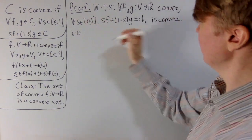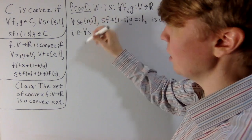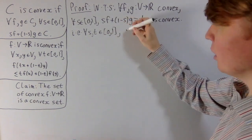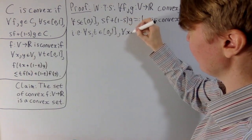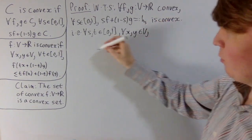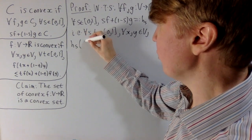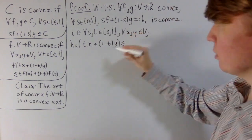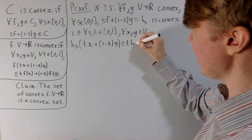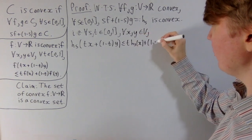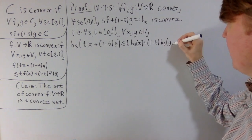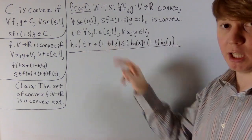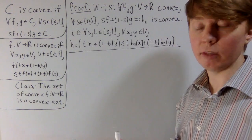What does it mean for h_s to be convex for all s? We need: for all s and for all t between 0 and 1, and for all x and y in V, the following inequality holds: h_s(t·x + (1−t)·y) ≤ t·h_s(x) + (1−t)·h_s(y). To prove this, we'll write out what this means and use the fact that f and g are convex.